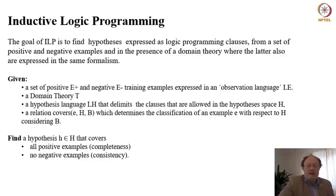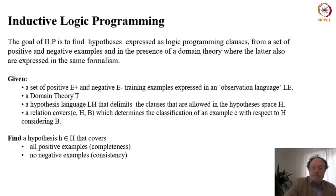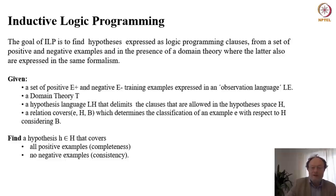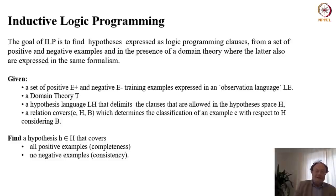The goal of ILP is to find hypotheses expressed as logic programming clauses from a set of positive and negative examples, in the presence of a domain theory, where both are expressed in the same logic programming formalism. Given are positive and negative examples in observation language LE, background theory T, hypothesis language LH delimiting the allowed hypothesis space, and a relation 'covers' — which decides whether a hypothesis entails an example given the background theory.